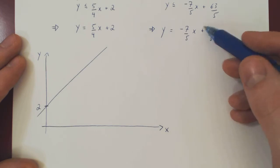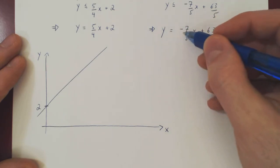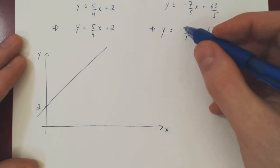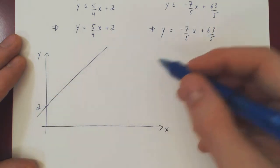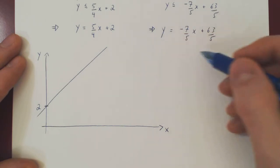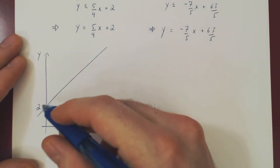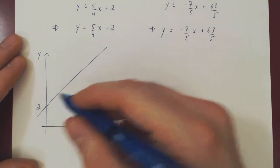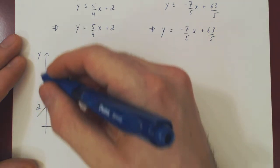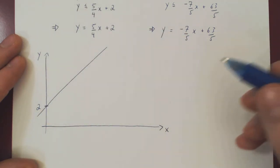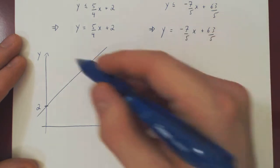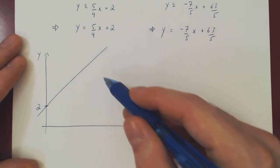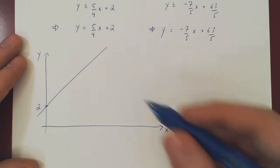And if you think of it, the corresponding inequality was that y had to be at most this line, and so y must be below this line. So the feasible region is going to be found below this line. What about the second line? Well, now we have a line with a negative slope, and if x is 0, if you look at the y-intercept, if x is 0, y is 63 over 5 which is way bigger than 2. Right? 5 times 12 is 60, so this is a little larger than 12.